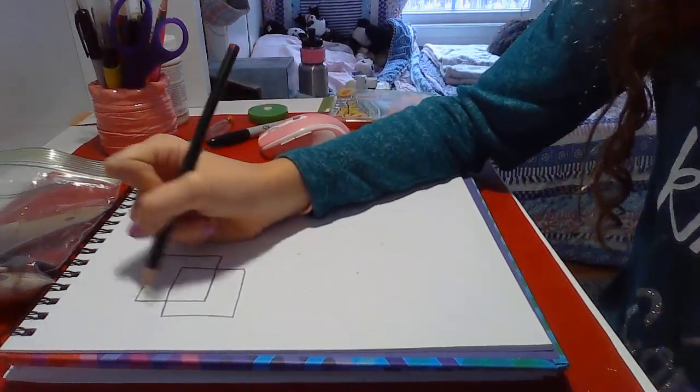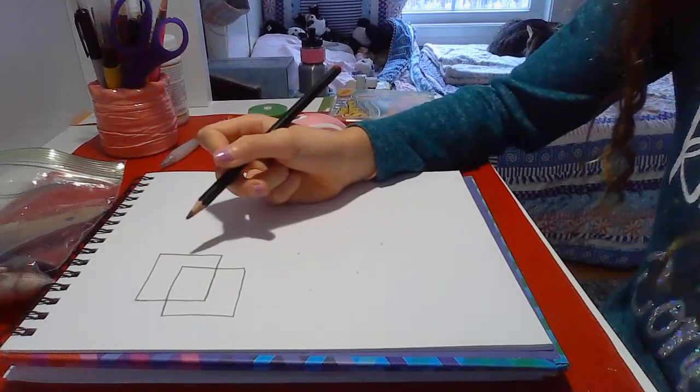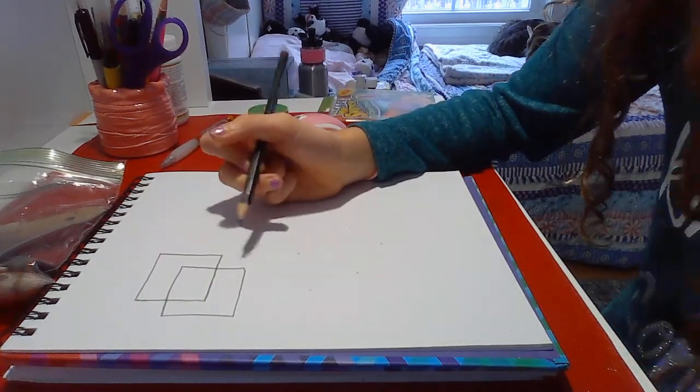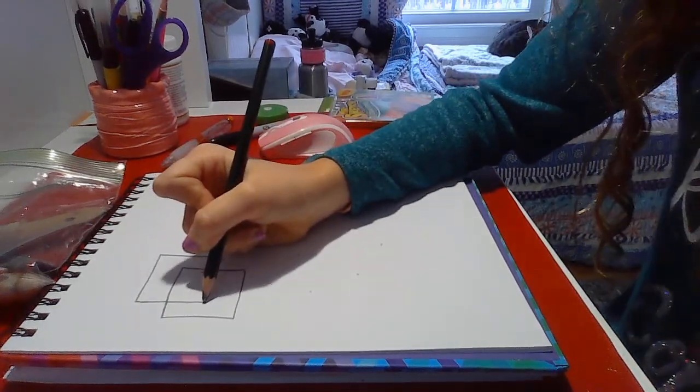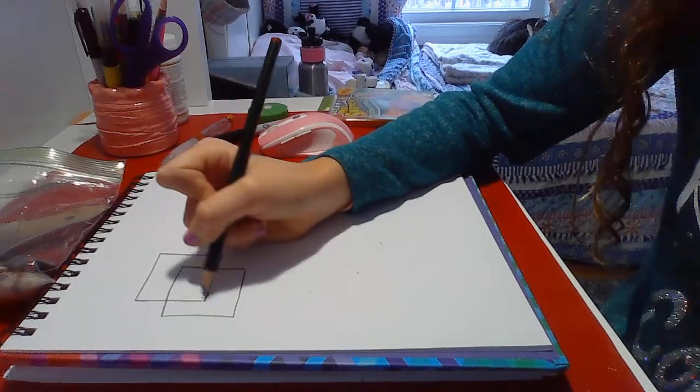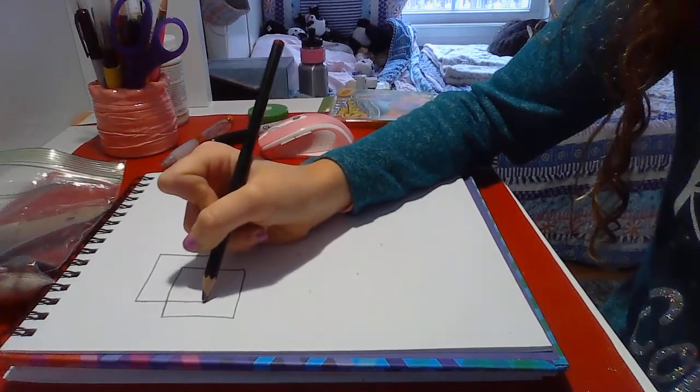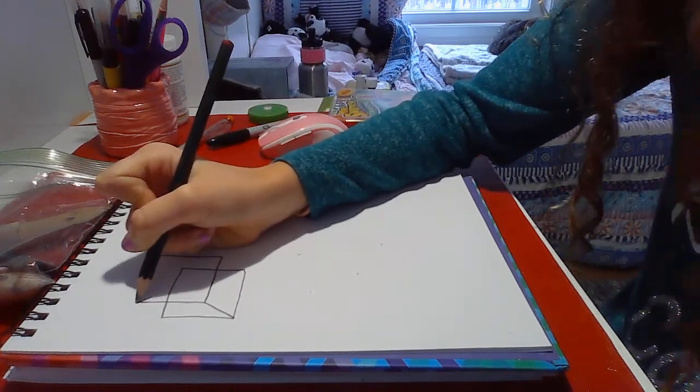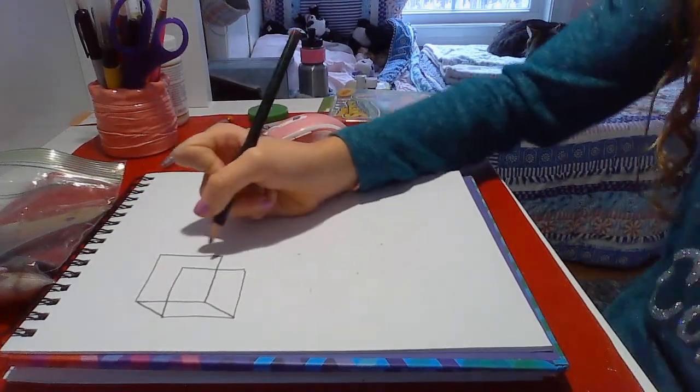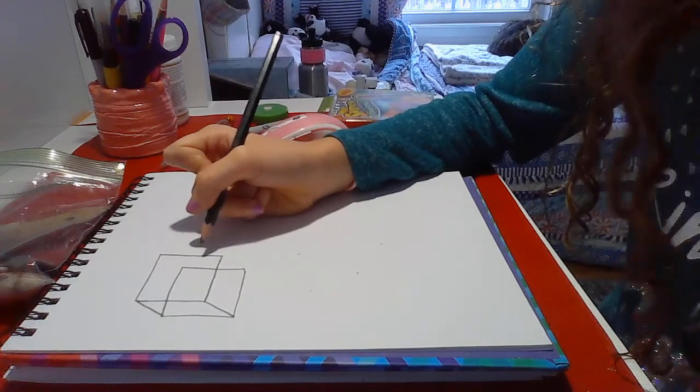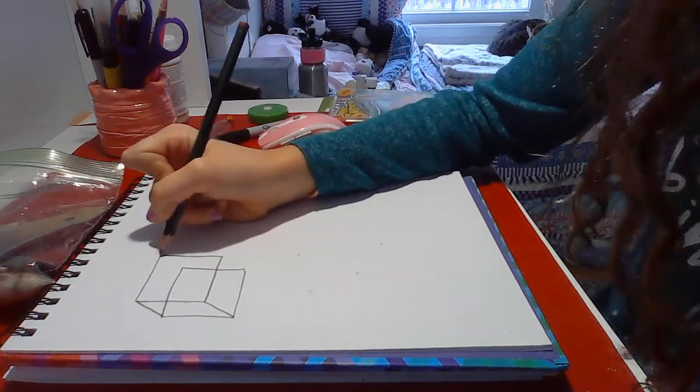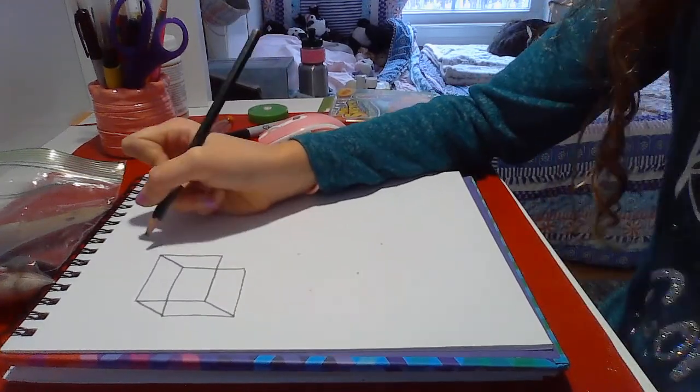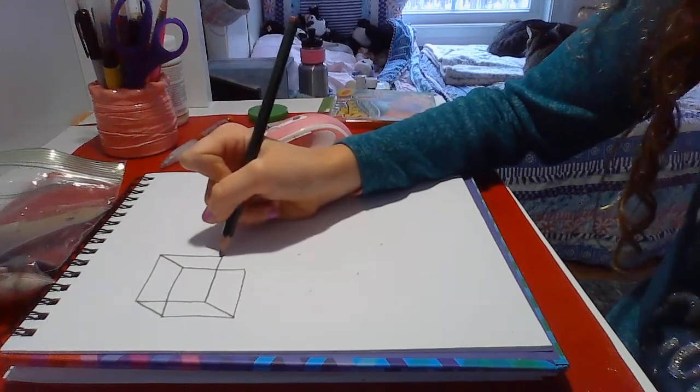And next we have to connect the lines. So we have to connect the two bottom corners that are on the left side, on the left bottom side we connect those. On the top left side we're going to connect those two. And then on the right side, on the top right we'll connect the top right corners and the bottom right corners.